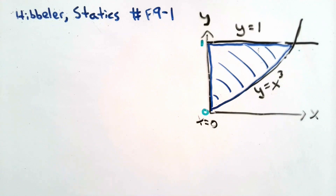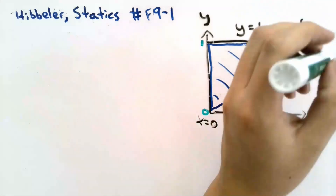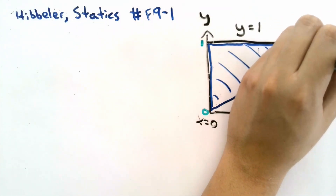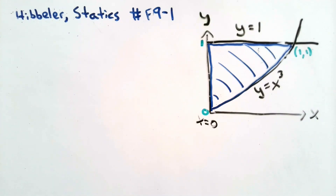There's only one possible value where y equals x cubed and y equals 1 intersect. That is when both x and y are equal to 1, because 1 cubed is simply 1. So we have our limits. Our shape will have to be integrated from y equals 0 to y equals 1, and from x equals 0 to x equals 1.